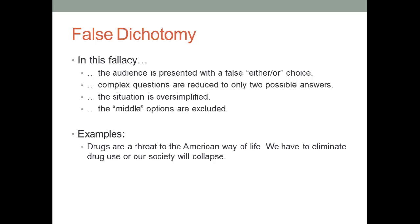For example: drugs are a threat to the American way of life, and we have to either eliminate drug use or our society will collapse. This is a false dichotomy because we're reducing a very complex situation to only two choices. Although drug use may cause problems, it almost certainly will not cause our society to collapse. This is a fallacy you might hear often in politics, political rhetoric, or in advertisements.